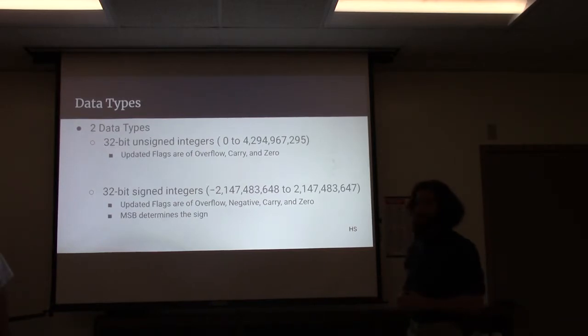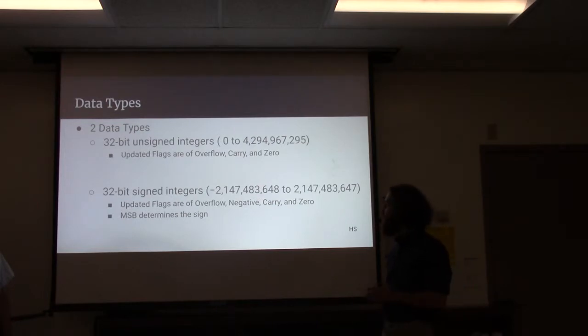While for the 32-bit signed integers, it ranges between approximately negative 2 million to 2 million, which the MSB determines the sign. And the updated flags are overflow, negative, carry, and zero.